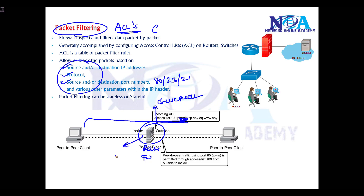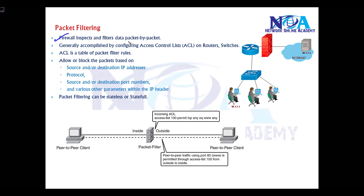Based on the rules we define, if configured as permit and the packet matches the rule, it will be allowed to pass through. If configured as deny, the packet is dropped. So packet filtering is essentially inspecting packets as they go through the device, and it's generally accomplished using ACLs on routers or multilayer switches. An ACL is a set of rules written on the device to either permit or deny traffic.